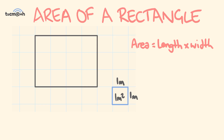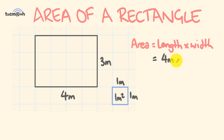Let's put a couple of dimensions in here. We have three meters for the width — one, two, three meters — and along the length we have four meters. So the area is equal to the length times the width: four meters multiplied by three meters, which gives us 12 meters squared.